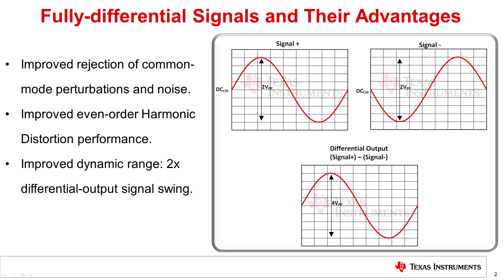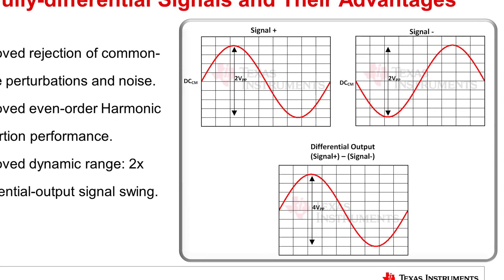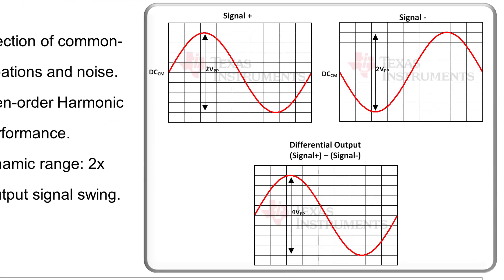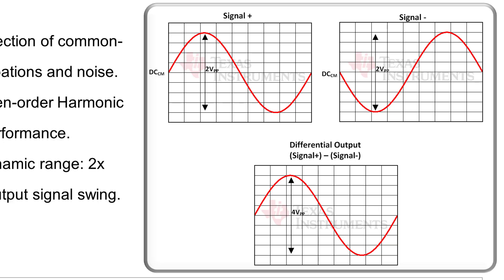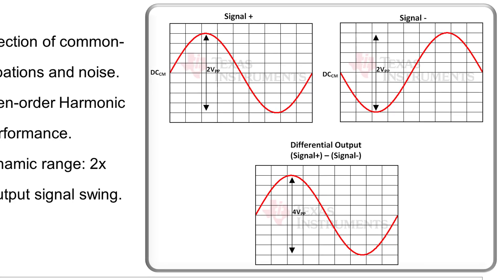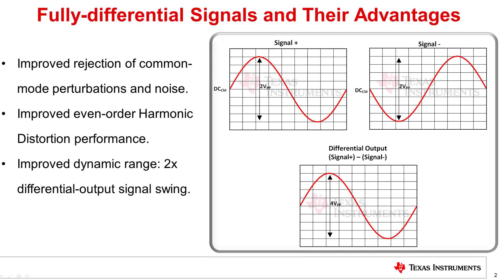A differential signal has several advantages over its single-ended counterpart. Since a differential signal is a difference of two single-ended signals that are out of phase with each other, any common mode perturbation will affect both signals equally and will ideally be canceled at the differential output. This rejection of common mode disturbances is one of the main advantages of the fully differential architecture.